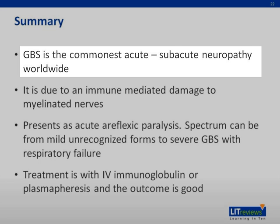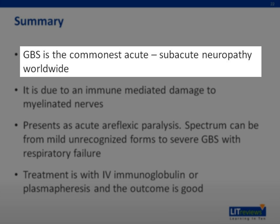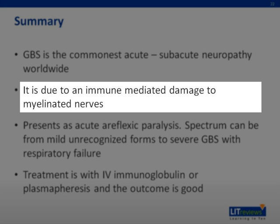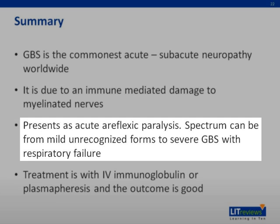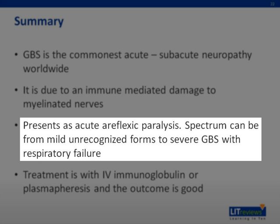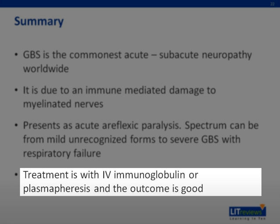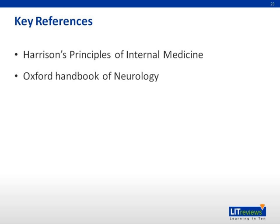To summarize, GBS is the most common acute to subacute neuropathy. It is due to autoimmune-mediated damage to myelinated nerves and presents as acute areflexic paralysis. The spectrum extends from mild often unrecognized forms to severe GBS with respiratory failure. Acute treatment is with intravenous immunoglobulin or plasmapheresis, and outcome is good for most patients. We hope you now have a better understanding of Guillain-Barré syndrome.